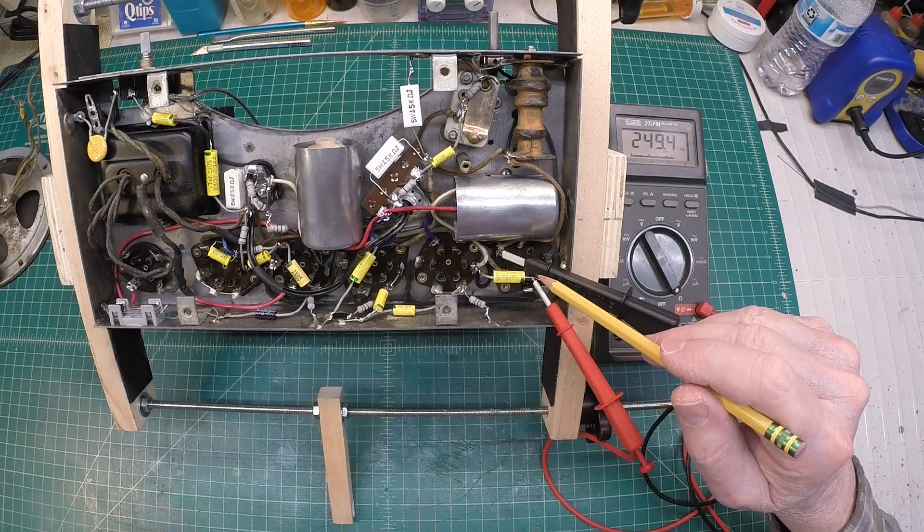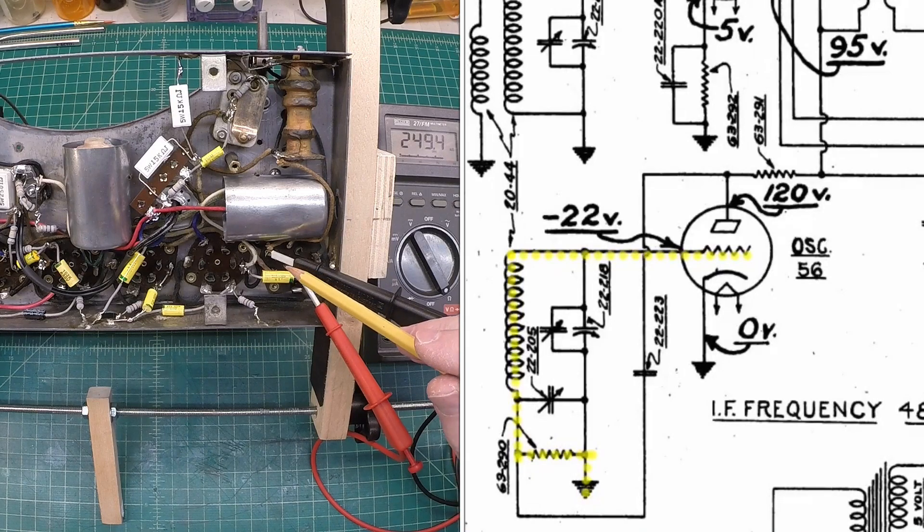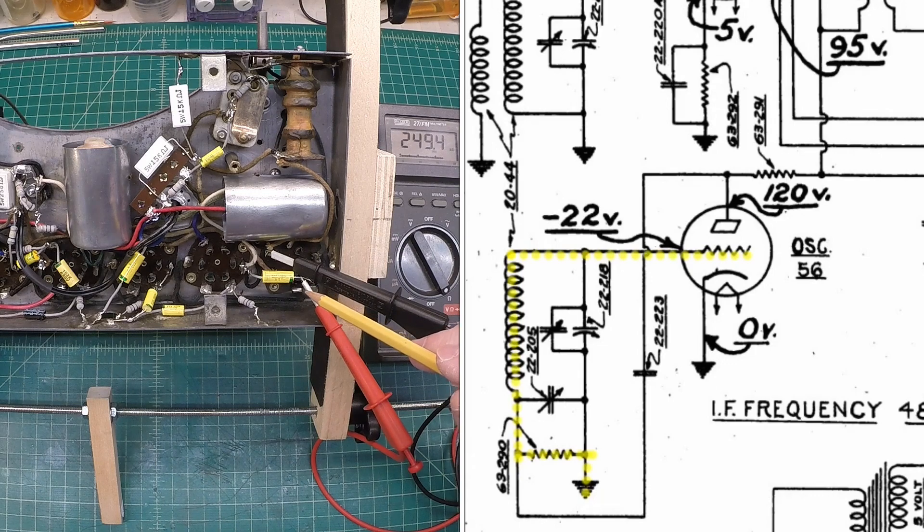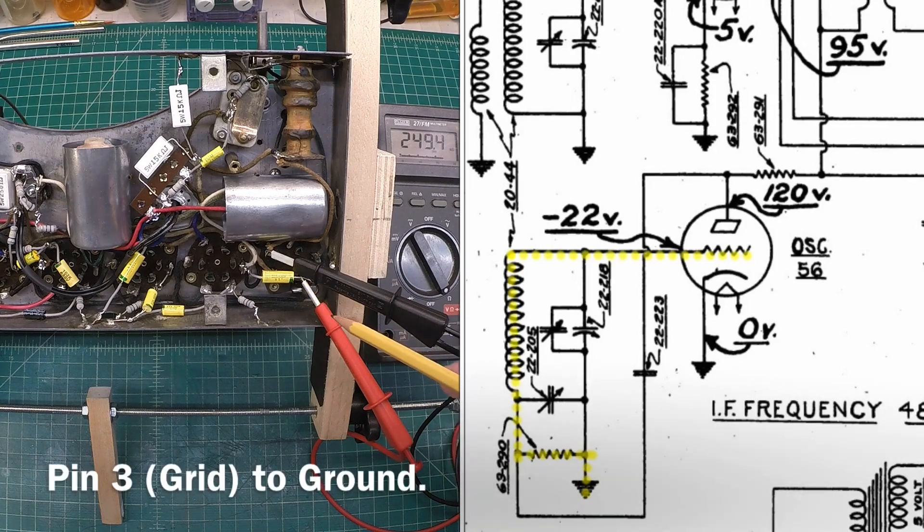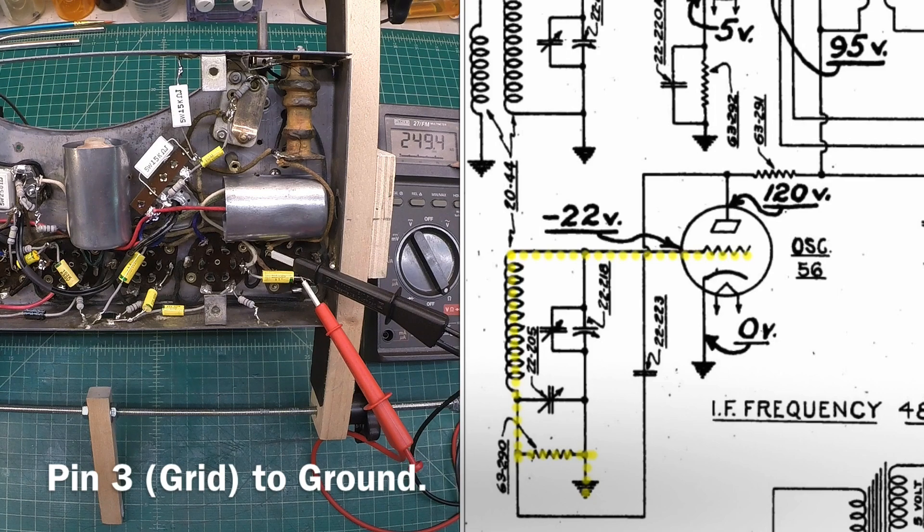We'll start with the 56 tube and do some measurements from that point out and you can see I've got the circuit highlighted that we'll be measuring here going from the grid to ground and you can see I'm reading about 250 ohms. This is part number 63-290 and it was originally called out at 260. I went back with 250k.